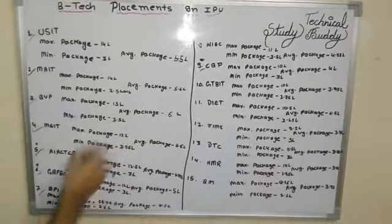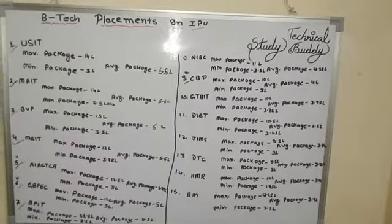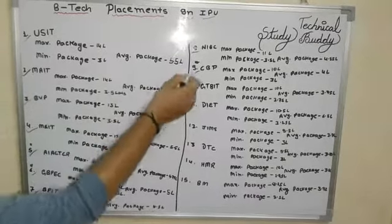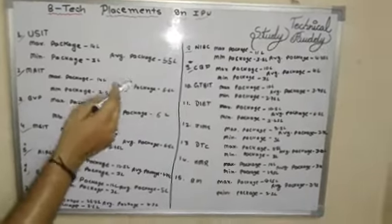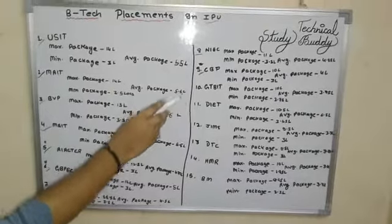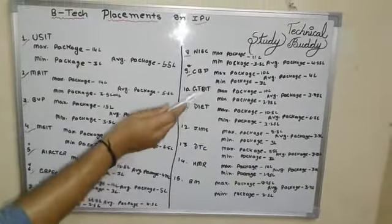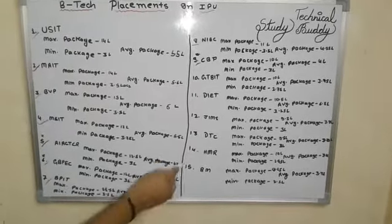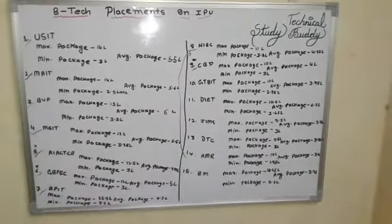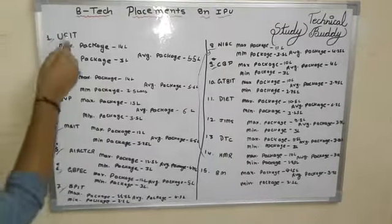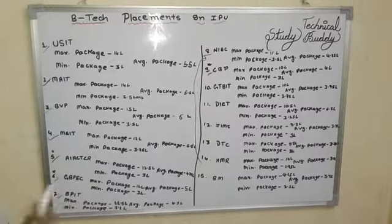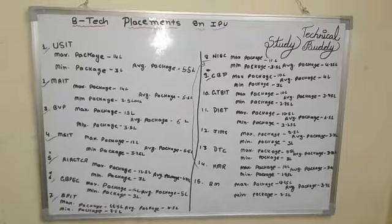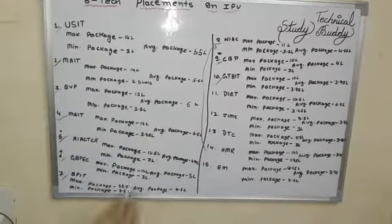Next is BPIT. BPIT has a maximum package of 11.5 lakhs, average of 4.5 lakhs, and minimum of 3.5 lakhs. Next is NIEC. NIEC has a maximum package of 11 lakhs, minimum of 3.5 lakhs, and average package of 4.25 lakhs. Students from outside also get placed through NIEC. I have seen all these things and verified the data.